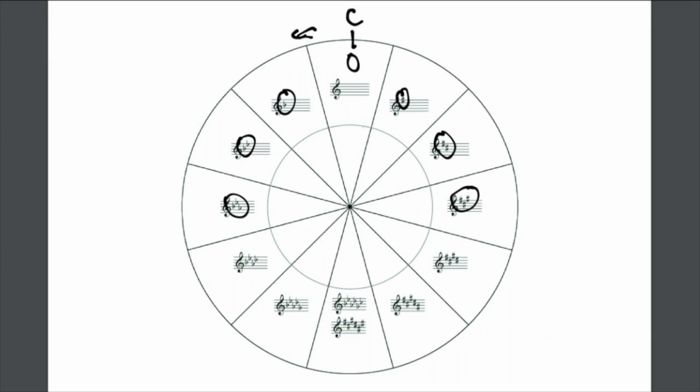Let's begin looking at position one. It's called the circle of fifths because we're going to count by fives. At one position, we have to count five up from C. One, two, three, four, five.